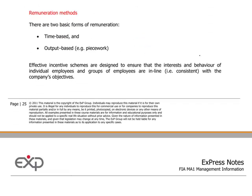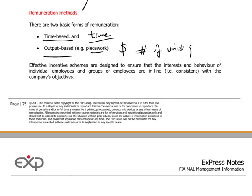Regarding labor costs, there are two main remuneration methods to consider. One is time-based — being paid according to the amount of time worked. The other is output-based, also known as piece work, which is traditional in the garment and clothing industry, where workers are paid according to the number of units produced.